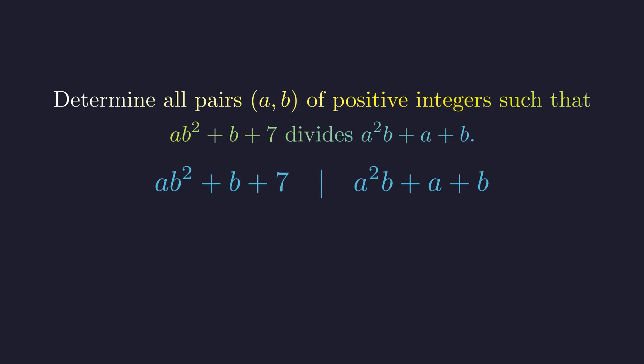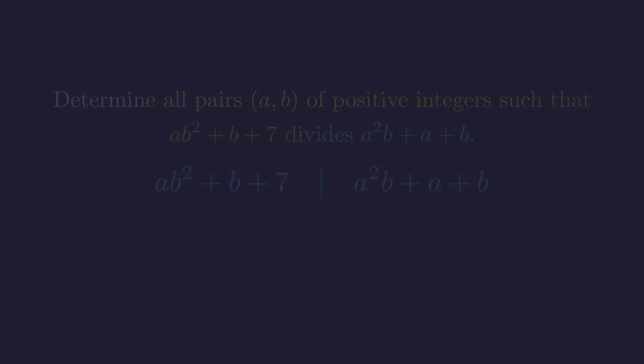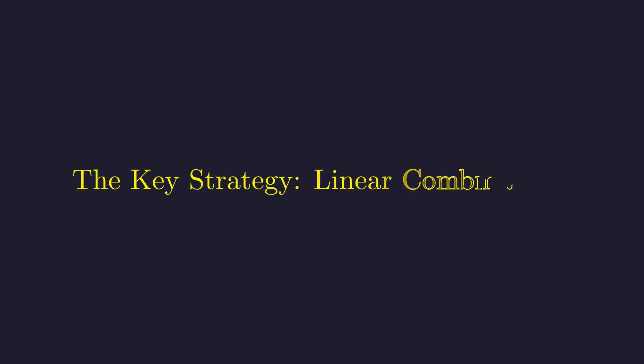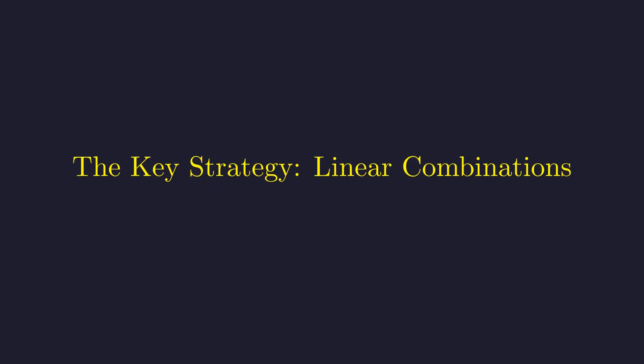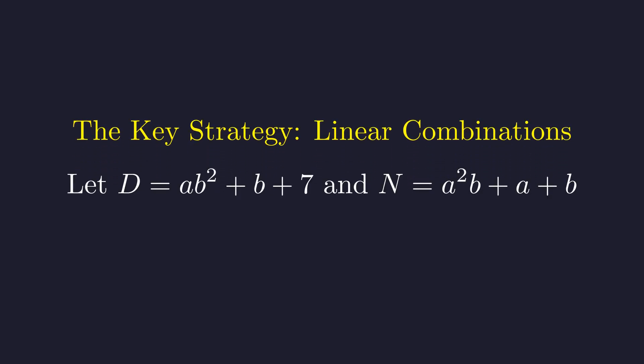The complexity of these polynomials makes a direct approach difficult. Therefore, our first goal is to find an algebraic simplification. The primary strategy for this type of problem is to construct a linear combination. The property states that if an integer divides another, it must also divide any integer linear combination of the two. To apply this strategy cleanly, we will define our terms.